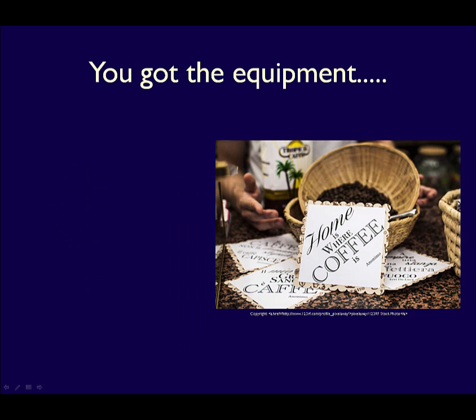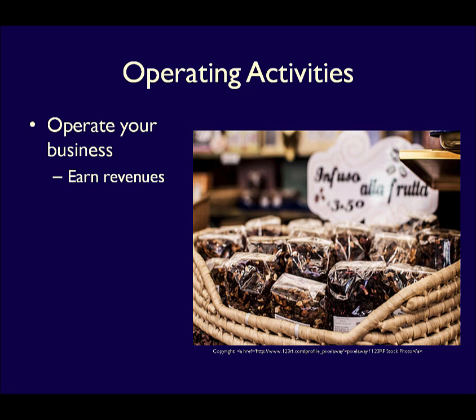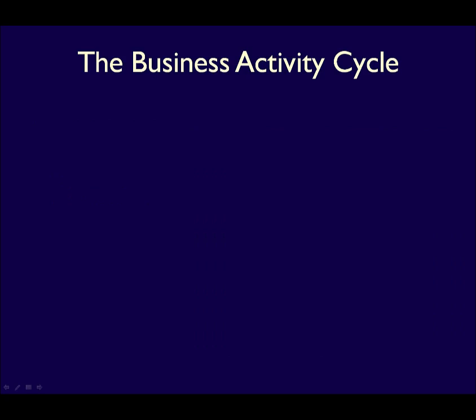Once you've financed your business and bought what you need to run it, you're going to have to begin operating the business. That would include selling your coffee beans to earn revenue — sales revenue in this case — and all the costs you will incur to earn that revenue, things like paying the salaries of your employees or the rent for your space. If you are using, consuming, or incurring costs to help you generate revenue, those are considered operating expenses and they are part of operating activities.